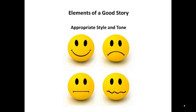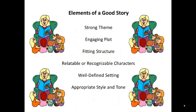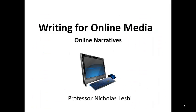Finally, make sure you have an appropriate style and tone. Choose the language that is right for the story. Use strong words and phrases that elicit the desired emotional reaction from your readers. Those are the key elements of a good story: a strong theme, an engaging plot, a fitting structure, relatable or recognizable characters, a well-defined setting, and an appropriate style and tone. Even if your blog is not primarily a narrative, remember that there are narrative elements in all blogs. So remember those tips and tell good stories — see you next time.